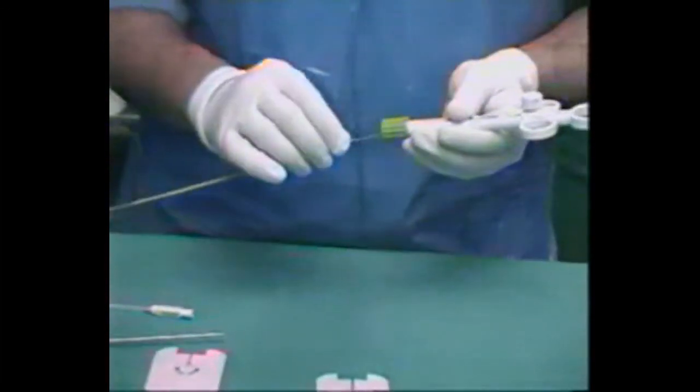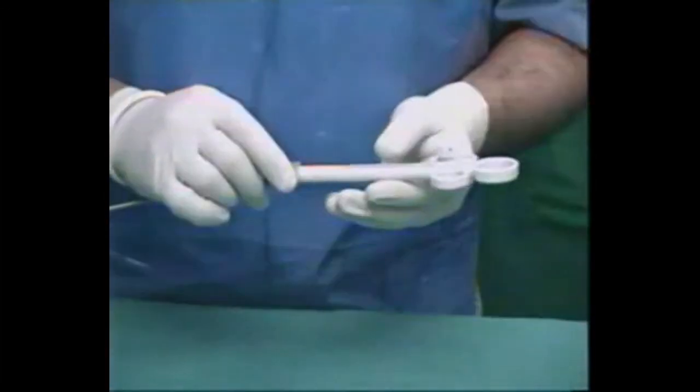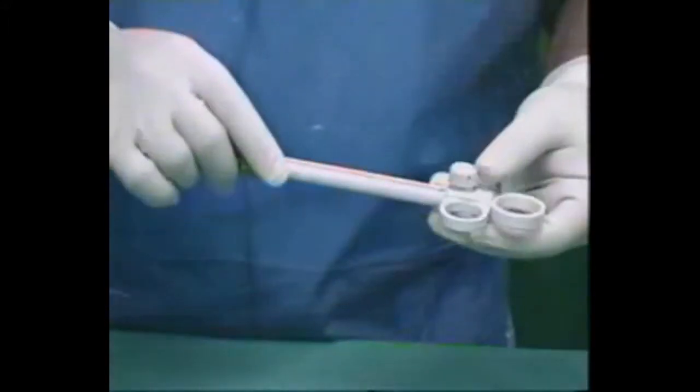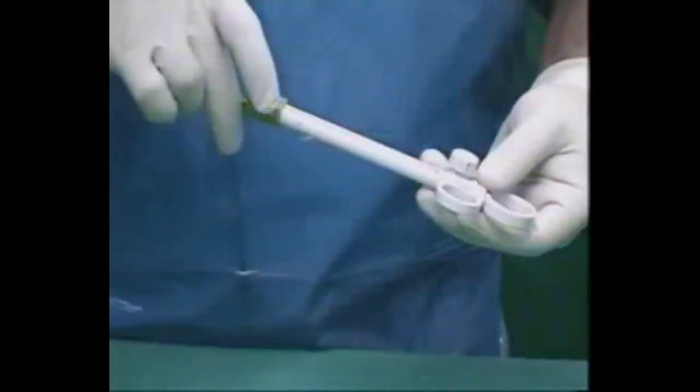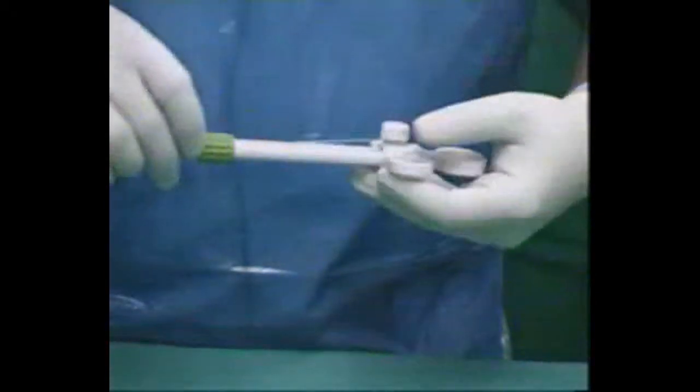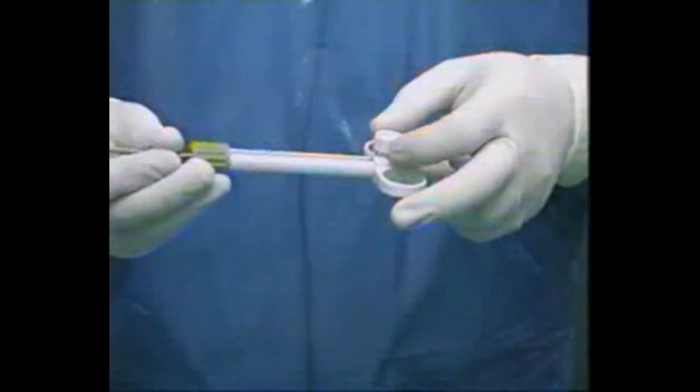The endo loop assembly has a plastic handle to which a metal cannula is fixed. The metal cannula has a metal needle with a groove at its distal end.